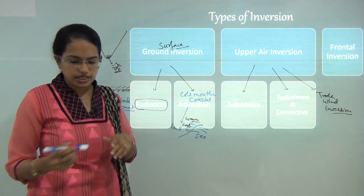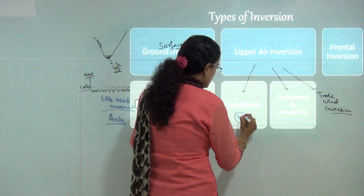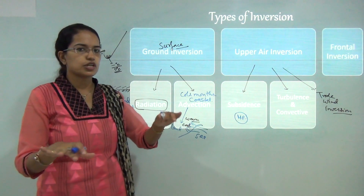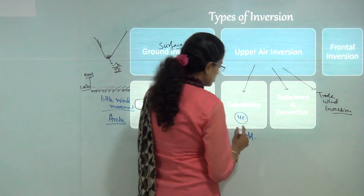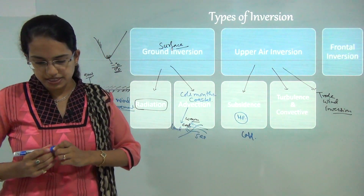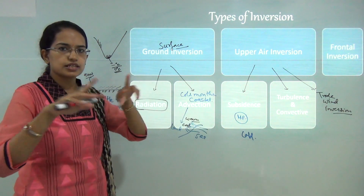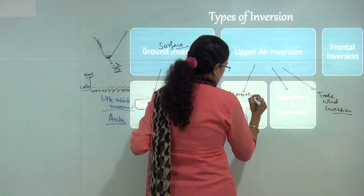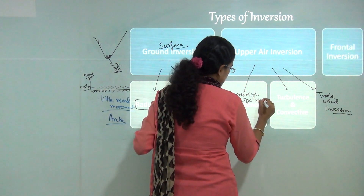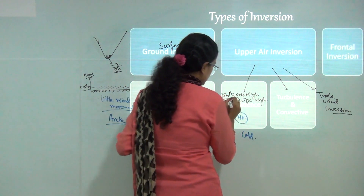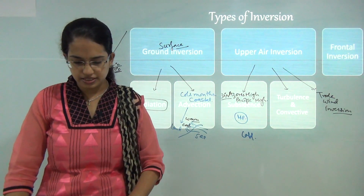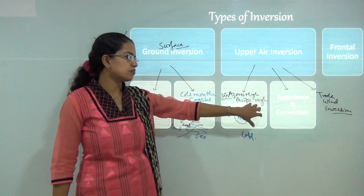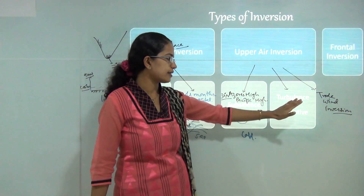Subsidence inversion involves the sinking of warm air, usually caused by high pressure at altitude. This sinking leads to cold air coming down, creating subsidence. Subsidence inversion is commonly seen around 30 degrees north, in the Azores High and Pacific High regions. This phenomenon is also common during night time.